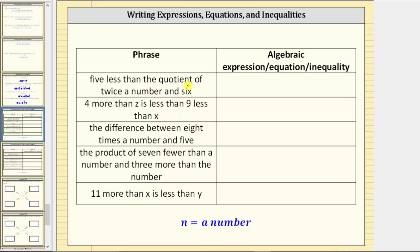Let's begin with the quotient. Remember quotient means division, so we have the quotient of twice a number and six, where a number is represented by the variable n. So twice a number is 2n, and therefore the quotient of twice a number and six is 2n divided by six. Remember a fraction bar means division, but the entire phrase is five less than this quotient, so we take this quotient and subtract five. The result is an expression.